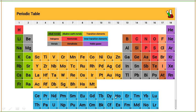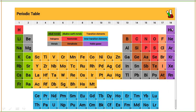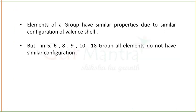Elements of a group have similar properties due to similar configuration of their valence shell. For example, all elements of group 18 have similar properties due to similar configuration. However, there is an exception: in group numbers 5, 6, 8, 9, 10, and 18, all elements do not have similar configuration. This can happen due to half-filled or fully-filled configuration, as electrons can jump from one subshell to another to gain stability.